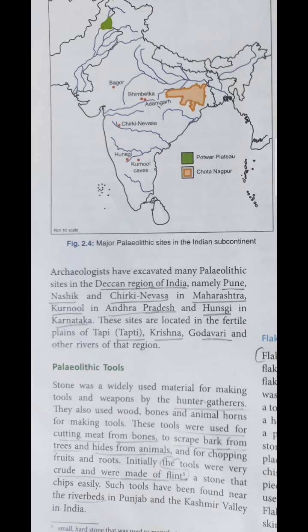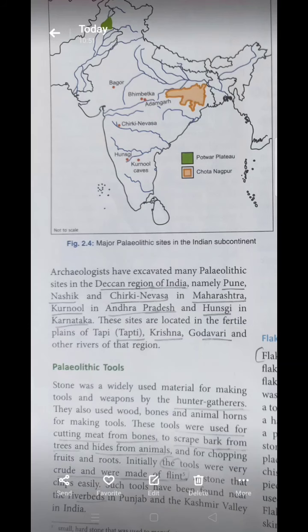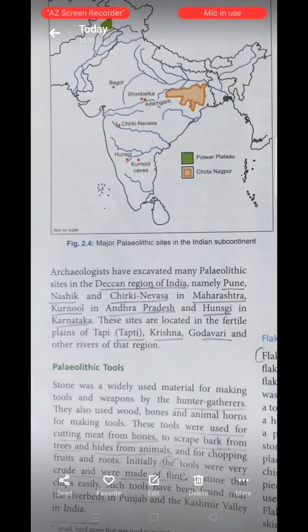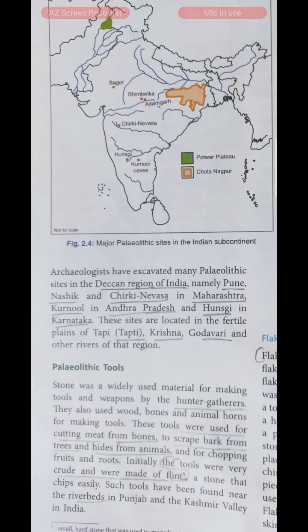The sites located in fertile plains — fertile means productive land where we can grow very good crops. So the fertile plains include the Tapi, Krishna, and Godavari rivers. As we have already discussed, people preferred to live where there is a river nearby, because water is essential for life and they understood this as well.